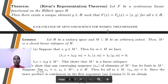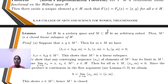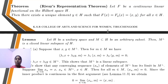Next, named theorem: Riesz representation theorem. The statement is: let f be a continuous linear transformation on Hilbert space H. Then there exists a unique element y belonging to H such that f(x) = ⟨x, y⟩ for all x belonging to H.